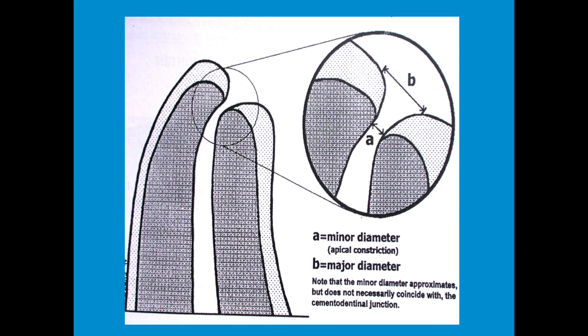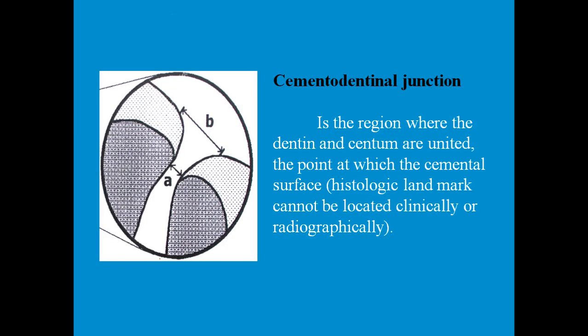A revision of the minor and major diameter: the minor diameter is the minor constriction or the most narrow part of the root canal where we should end our root canal treatment. The major diameter of the apical foramen is where the pulp extends into the periapical area.